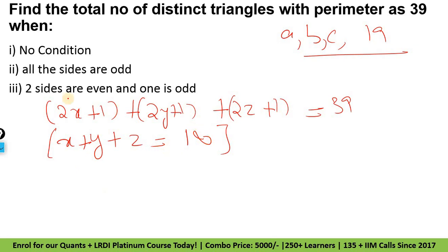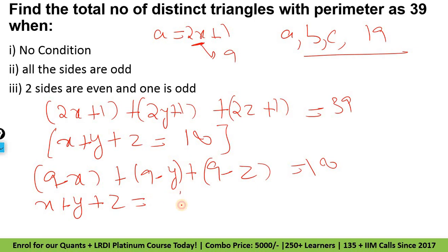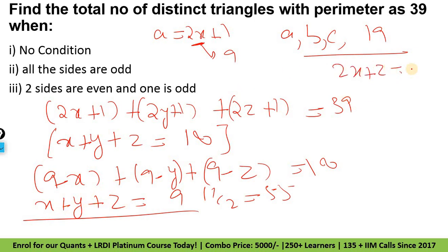Theek hai. Ab dekho ek cheez — humne kaha tha ABC 19 se kam hone chahiye. Yahan XYZ ki value kya ho sakti hai? Agar A tumhara 2x plus 1 hai toh x ki maximum value 9 hogi — 9 into 2 is 18 plus 1 = 19. Toh XYZ 9 se zyada nahi ho sakte. Toh ab substitute karo: 9 minus x plus 9 minus y plus 9 minus z equals 18. Toh x plus y plus z = 9.